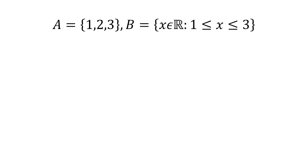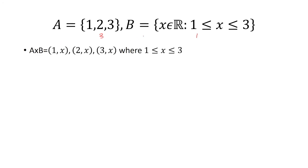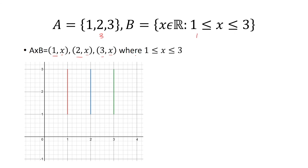In our next example, set A contains the numbers 1, 2, and 3. Set B has X as a real number between 1 and 3. Here we have three choices for A and one case for B, so 3 times 1 gives us 3 total cases. We start with elements from set A — that's 1, 2, and 3 — and since there's only one case for B, we label it X. X is between 1 and 3, so now we graph this.